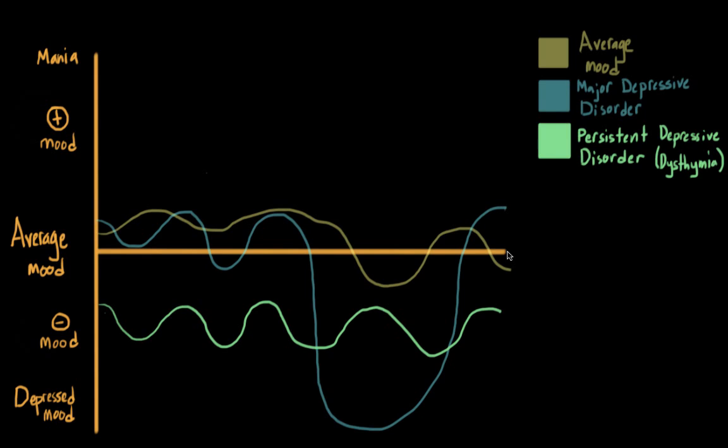So instead of having their baseline here, someone with persistent depressive disorder might have their baseline a lot lower down. And so all of their moods will happen within this depressive space.